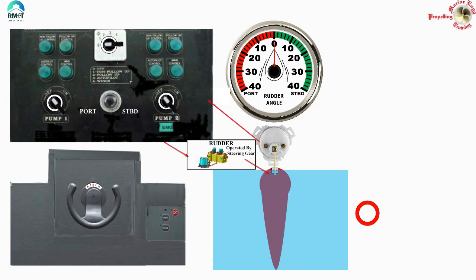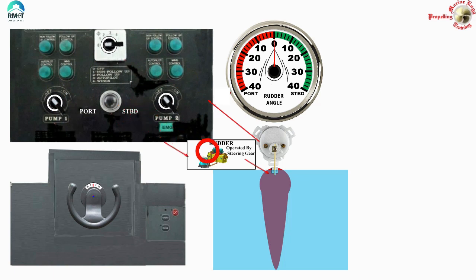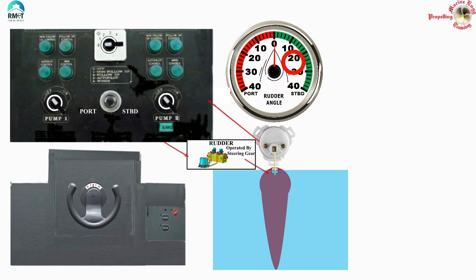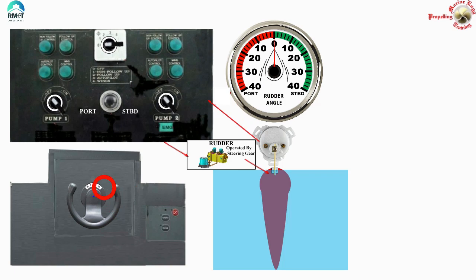Now we are going to see the operation of the steering gear in manual mode. There are two types of operation: follow-up and non-follow-up. Let us have an overview of the control panel. The system gives a signal which goes to the steering gear, and the steering gear operates the rudder. When the rudder is turning, the rudder angle transmitter picks up and gives feedback back to the system, and also drives the rudder angle indicator - the visual display seen on the bridge wings, engine control room, emergency steering flat, and on the bridge.